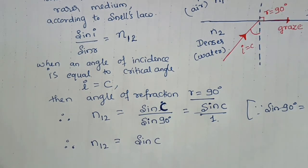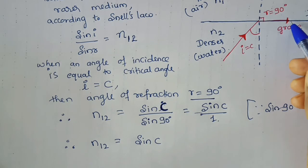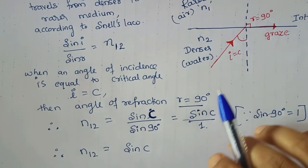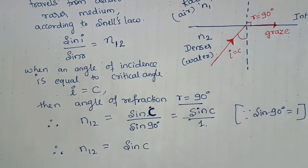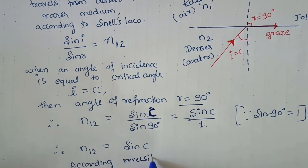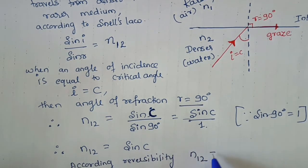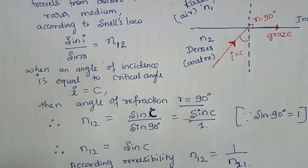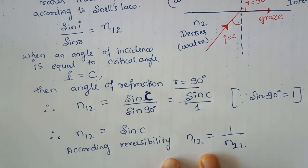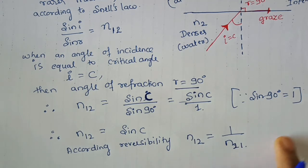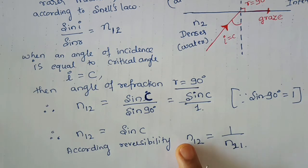We know that light follows the principle of reversibility of path. According to reversibility, n12 equals 1 divided by n21 — the refractive index of medium 1 with respect to medium 2 equals 1 over the refractive index of medium 2 with respect to medium 1. So in place of n12, we can write 1 / n21.